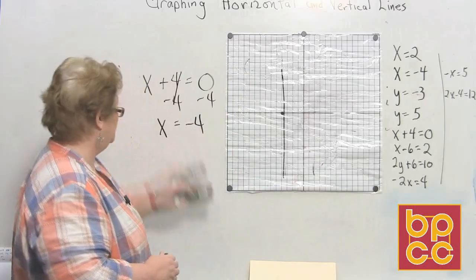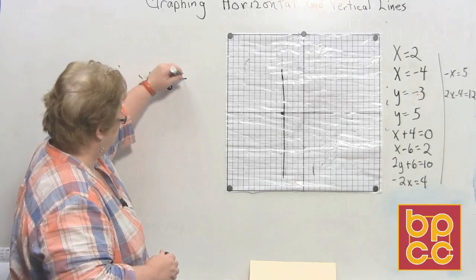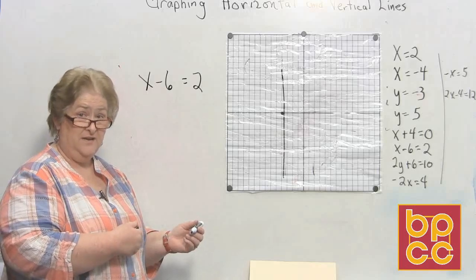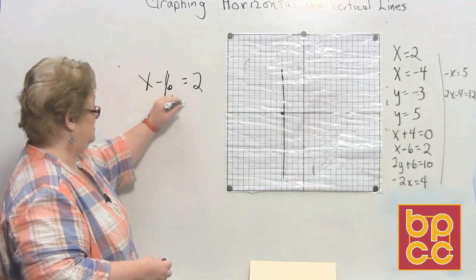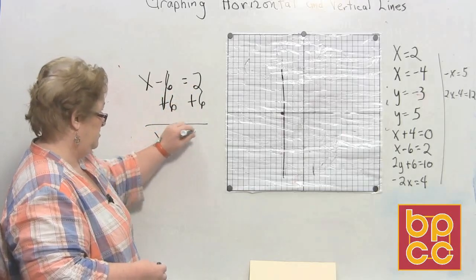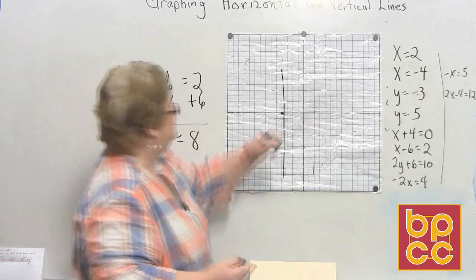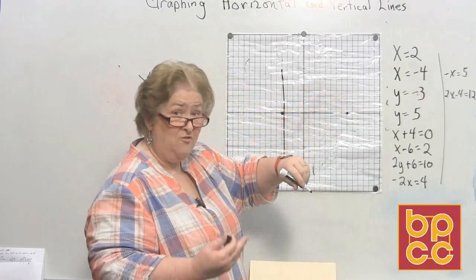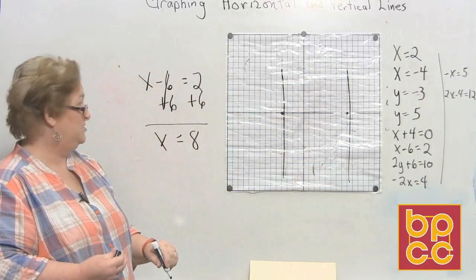Now let's look at X minus 6 equals 2. We can't graph that yet because X has not been isolated. So let's add 6 to both sides to clear it. X is now equal to 8 and that's totally ready to graph. So I'm going to go on the X axis to a positive 8 and it has to cross over itself. That's X is equal to 8.